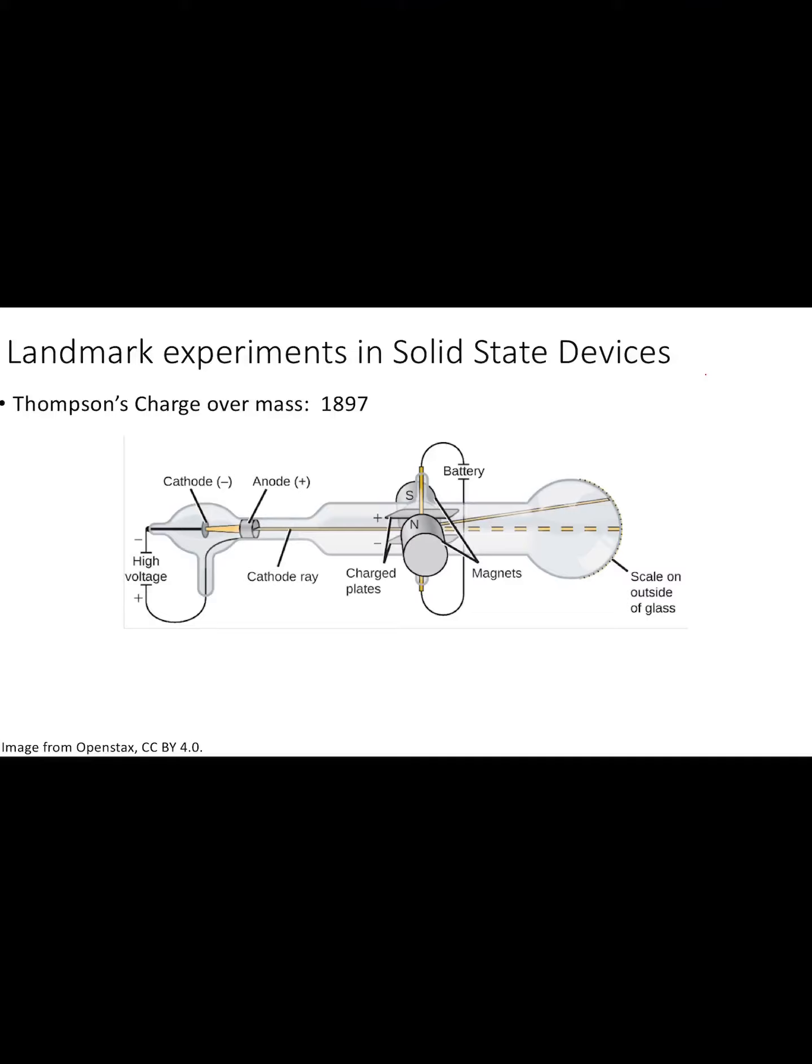One of the most important experiment was conducted by JJ Thompson in the year 1897. He was trying to figure out, so basically at this point, people knew that the electrons were negatively charged. And he was trying to figure out the exact value of charge and the mass of the electron, but however, he managed to only find the ratio of charge by mass. He had this very elaborate setup. At that time, it was known that if you apply a large negative potential to a metal, you will be able to knock out an electron and the electron will travel at the velocity v outside the metal.